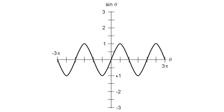Any sine wave looks like some variant on this waveform. It might be 2 sine theta, in which case the amplitude would go up to 2 and down to minus 2. Or the frequency might be different.